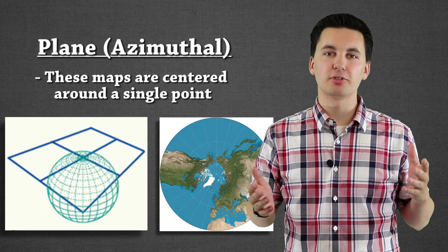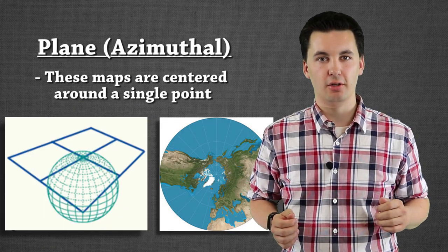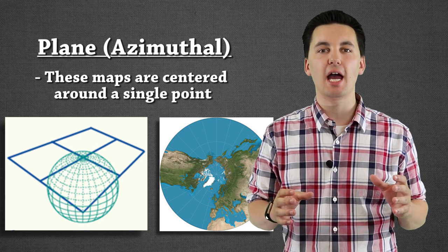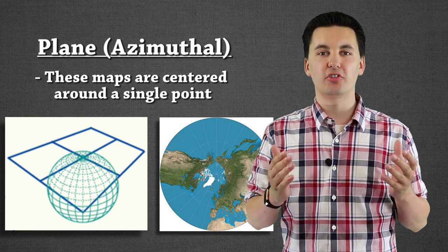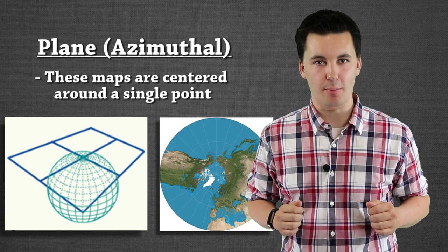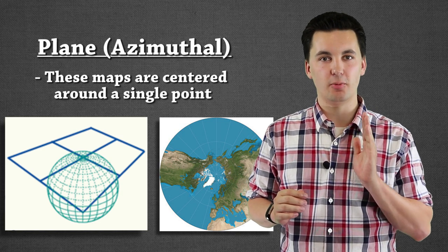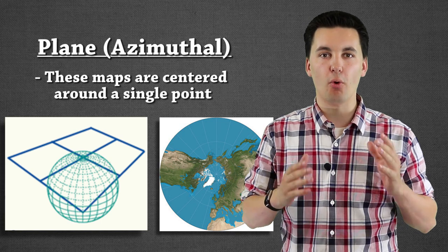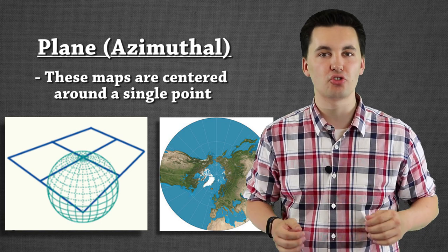Next, developable surface is a plane, also gets connected with an azimuthal. Now, what's happening here is we have the globe and what you're going to do is essentially lay a piece of paper on top of it. The point that it is balanced on is going to be our center point for this developable surface, for this projection.